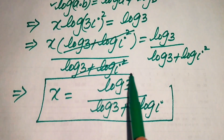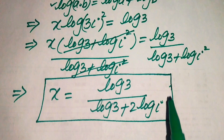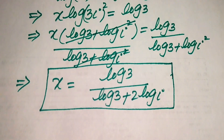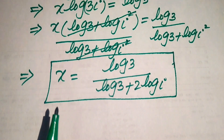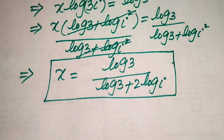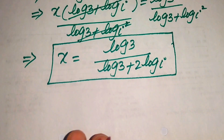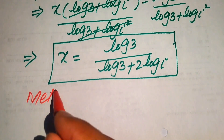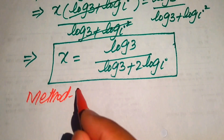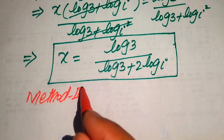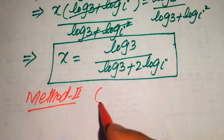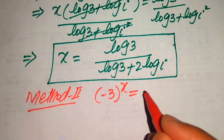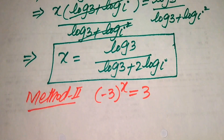So this is the value of x obtained from the first method. Now we move forward and solve this problem using the second method. We copy down the given equation: minus 3 to the power of x equals 3.